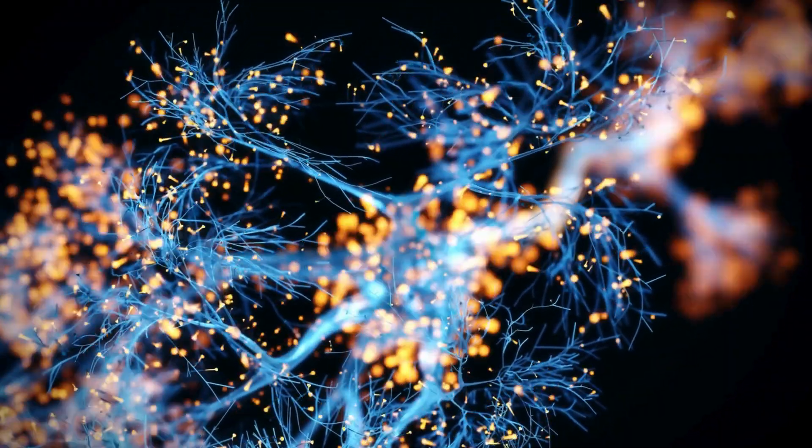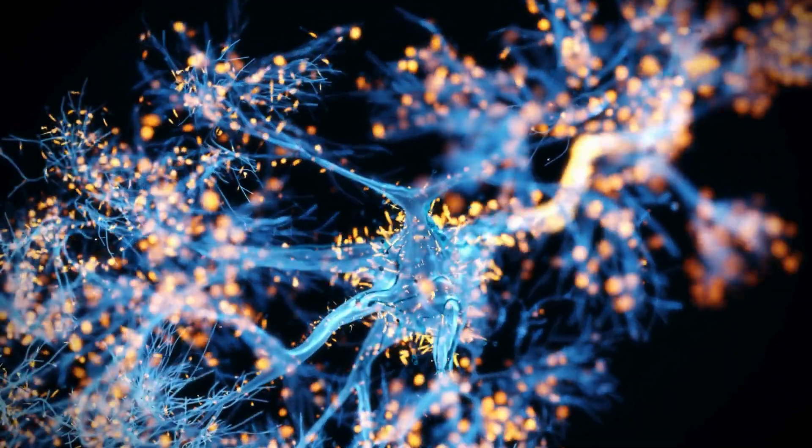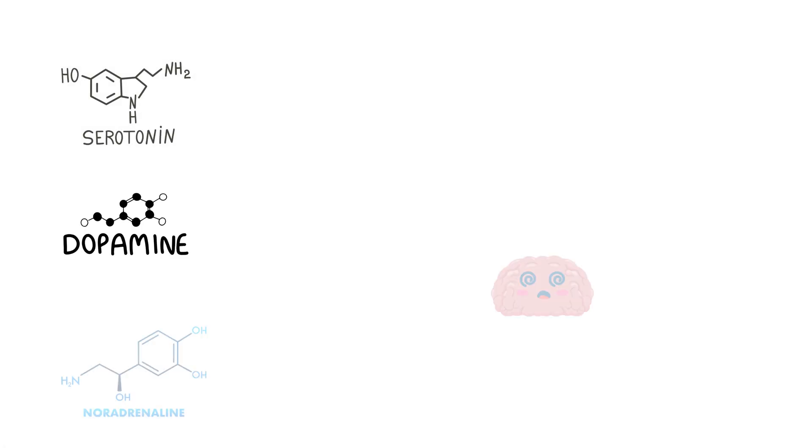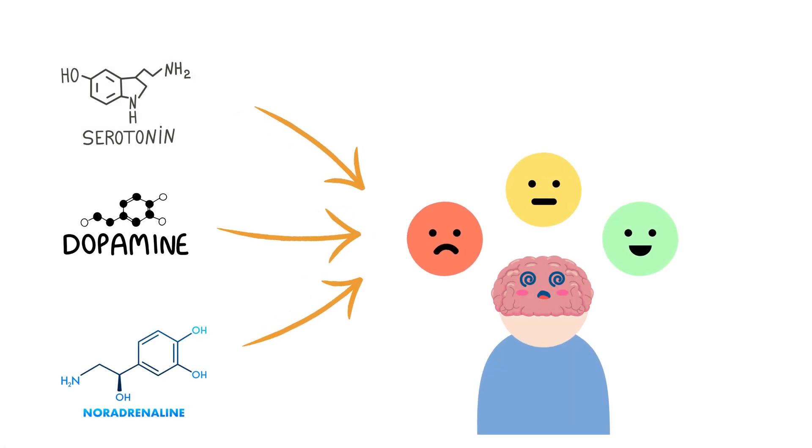Now, this is just one mechanism that leads to sedation. Another crucial system involved in sedation is the monoaminergic system. Imagine serotonin, dopamine, and norepinephrine as messengers in your brain, controlling your mood, pleasure, and alertness.